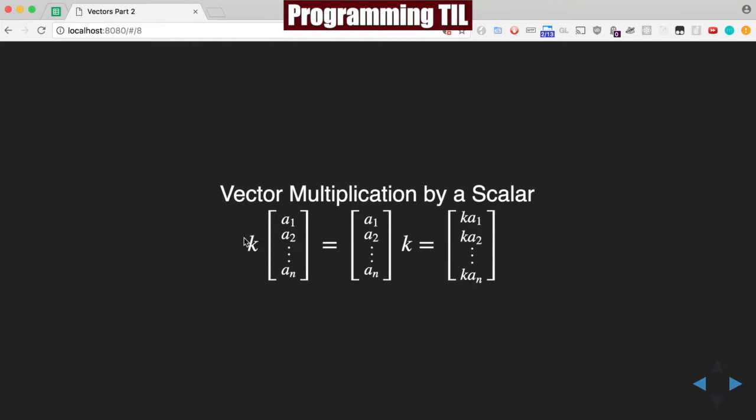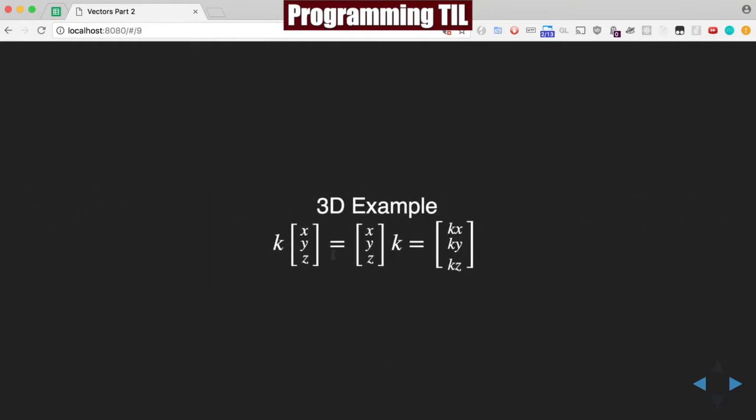This is actually an example of negation when k equals negative 1. Here's the 3D example where it's k·x, k·y, and k·z when multiplying by a scalar.